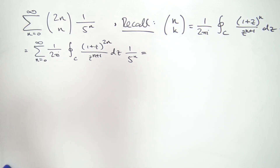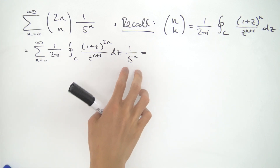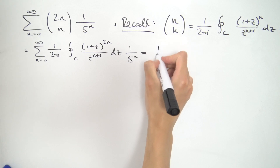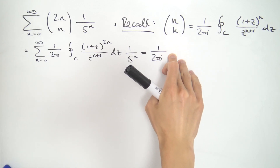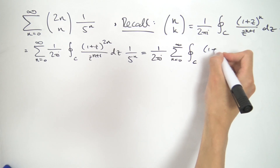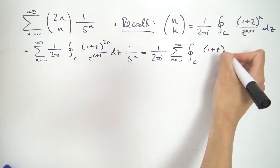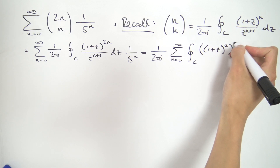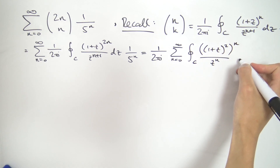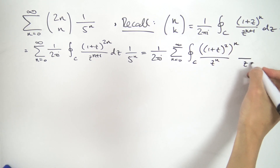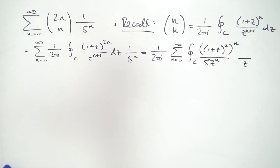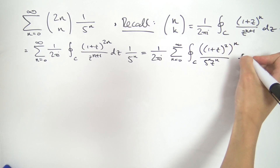Now what we're going to do is start manipulating things a little bit. Let's start by dragging this 1 over 2 pi i onto the outside, and we're going to drag this 1 over 5 to the n inside the integral because it doesn't depend on z. So now we have 1 over 2 pi i times the sum from n equals 0 to infinity of the contour integral over z of 1 plus z squared, raised to the nth power, divided by z to the n times 5 to the n, times dz.